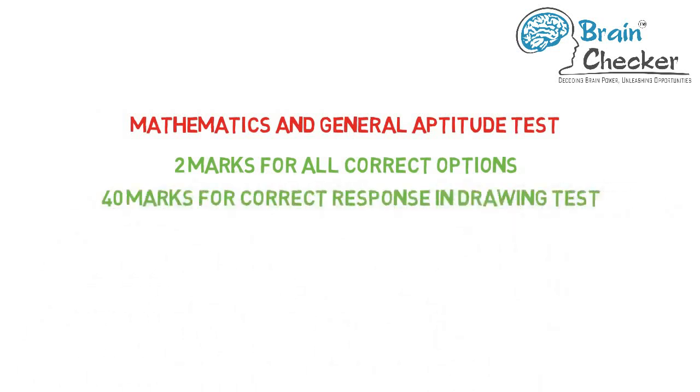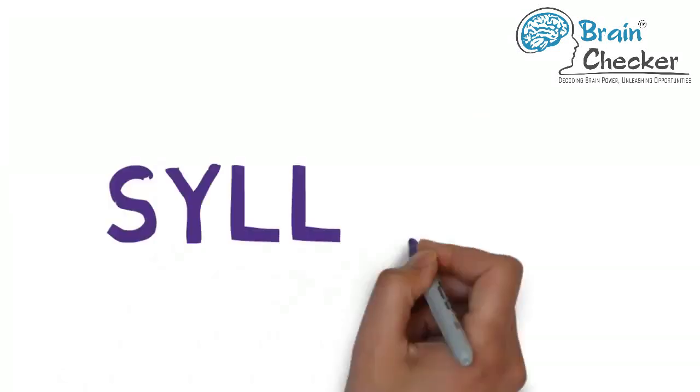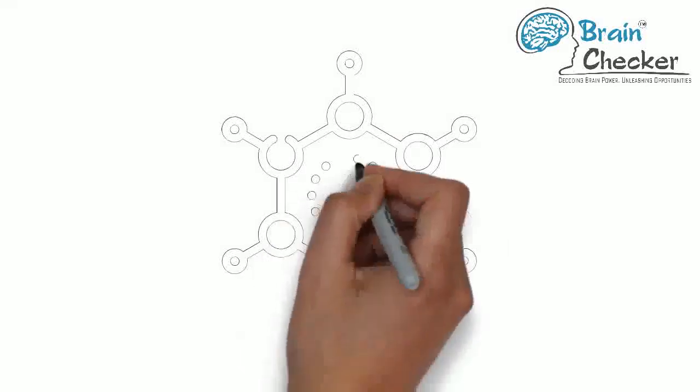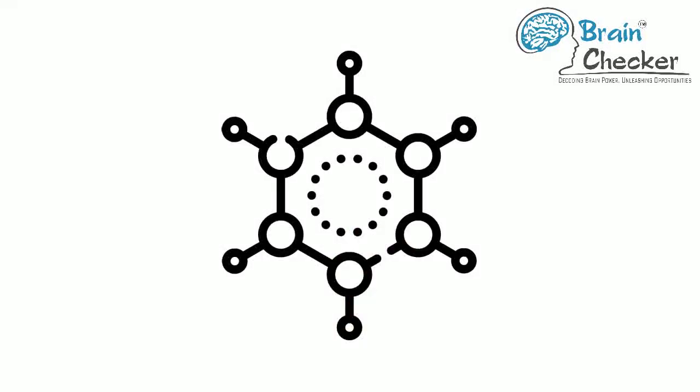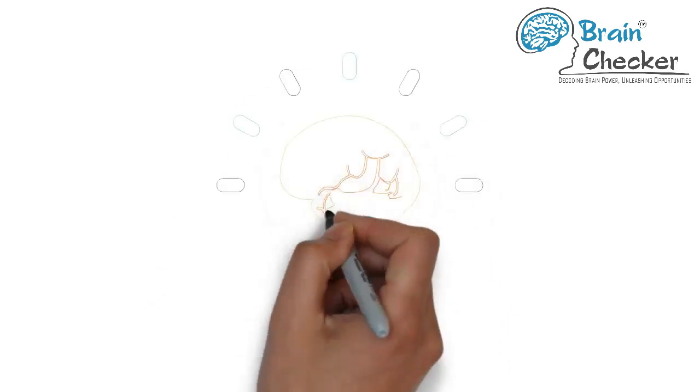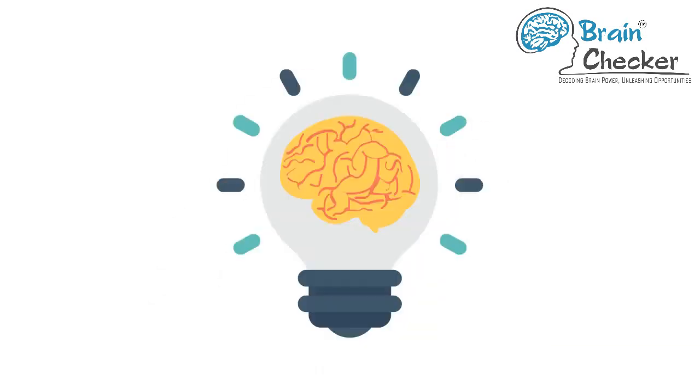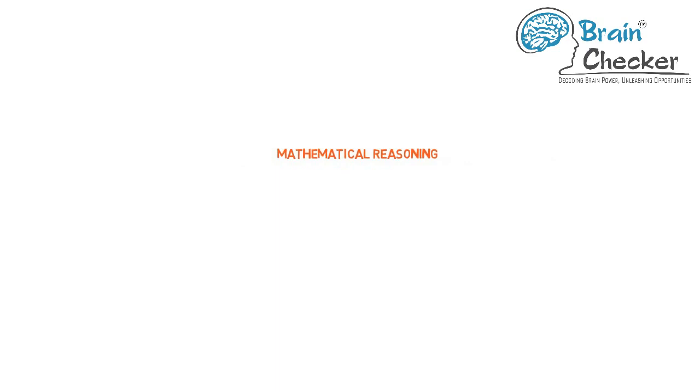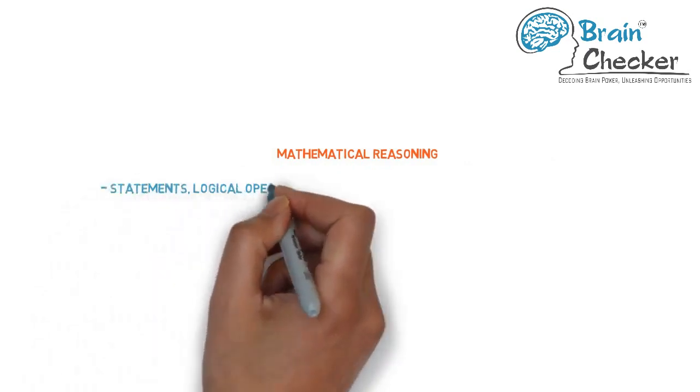Let's go to syllabus. General aptitude includes objects and texture related to architecture, interpretation of pictorial compositions, visualizing 3D objects from 2D drawing, visualizing different sides of 3D objects, analytical reasoning and mental ability, general awareness of national and international architects and famous architectural creations. Mathematical reasoning includes statements, logical operations like AND, OR, if and only if, implies, implied by, understanding of tautology, converse, contradiction, and contrapositive.